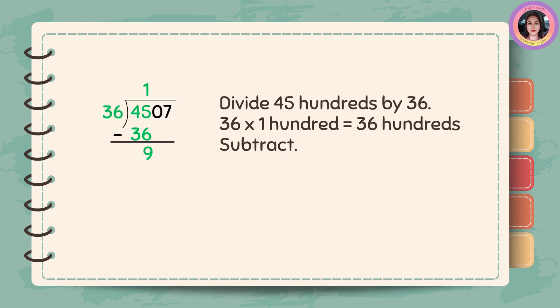4,507 divided by 36. Divide 45 hundredths by 36. 36 times 100 is equal to 36 hundredths. And then subtract. 45 minus 36 is 9.